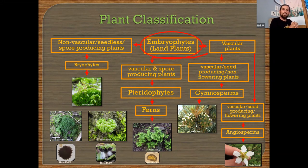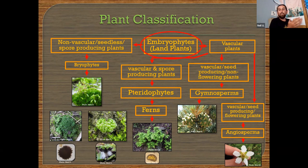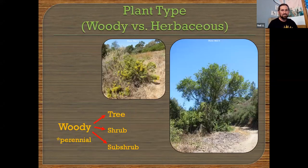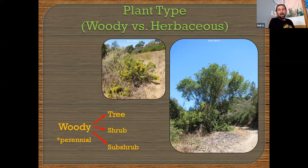Jumping to vascular plants that produce seeds — those are your gymnosperms. I'm just going to mention them and not talk much about them today. Then below gymnosperms, you have vascular plants that produce seeds and also produce flowers — that's what makes them unique as angiosperms, the flowering plants. We're going to focus on vascular plants and angiosperms going forward.